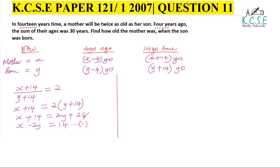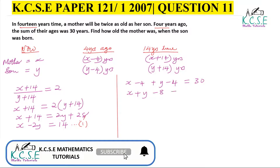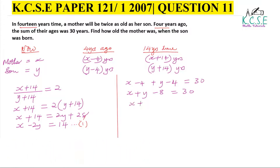Now for the second statement: 'Four years ago, the sum of the ages was 30 years.' Four years ago the mother's age is x minus 4, and the son's age is y minus 4. Adding them: x plus y minus 8 equals 30, which gives x plus y equals 38. This is equation number two.